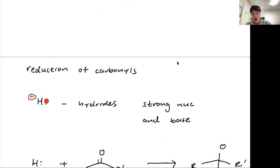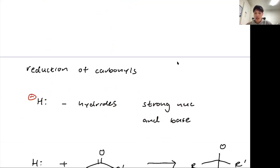It's an H with lone pairs of electrons. Because it has lone pairs, it has a negative formal charge. These are called hydrides. As you can see, it's a strong nucleophile and a strong base. If you remember, nucleophiles are strongest when they go left on the periodic table. This is the first element of the periodic table - this is as left as it can be. Because of that, we can take advantage of this chemistry.